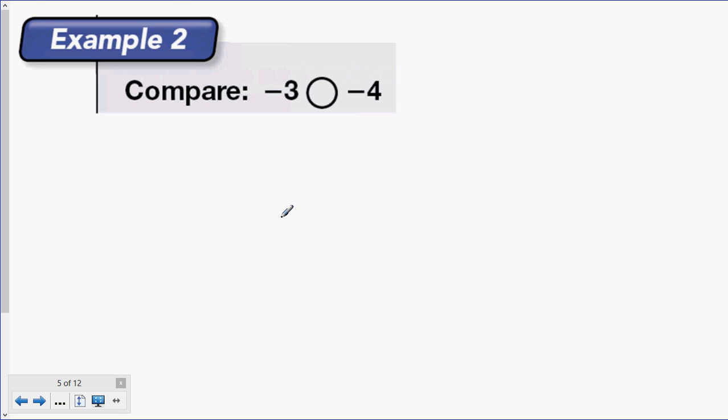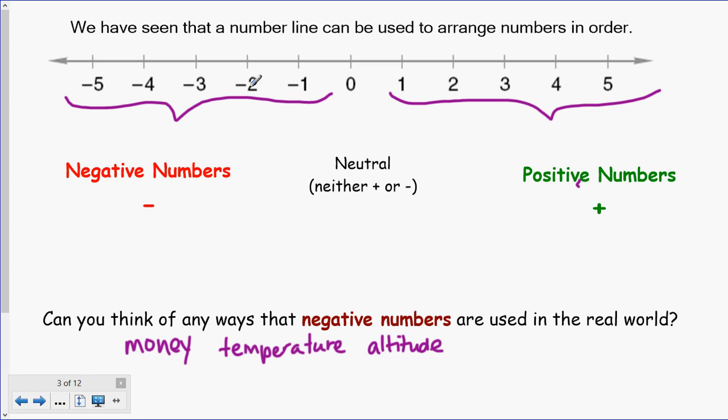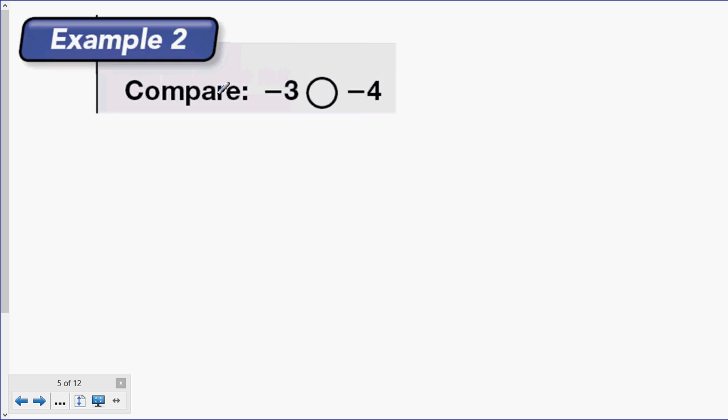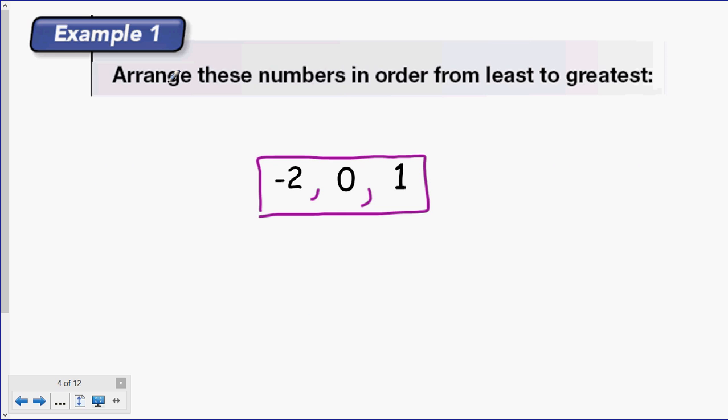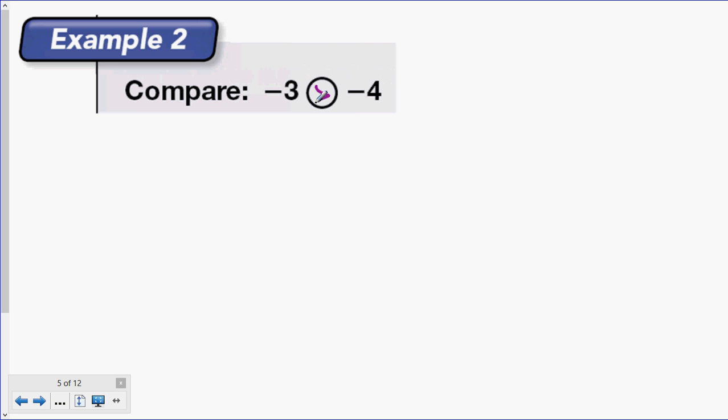Example two asks us to compare negative three and negative four. Now remember, when you compare two numbers, you are telling if they are equal. And if they're not equal, you have to say which is greater. So let's go back to that number line in the beginning of the lesson. We are comparing negative three and negative four. You're going to notice that here's zero. Negative three is closer to zero on the number line than negative four. So negative three actually has a value that is greater than negative four. So let's go back and fill that in. Negative three is greater than negative four.